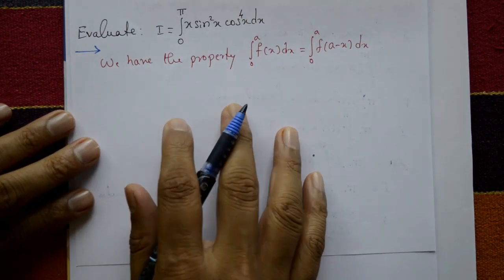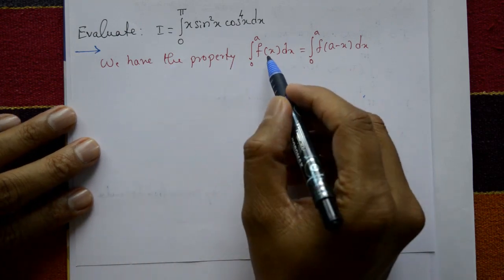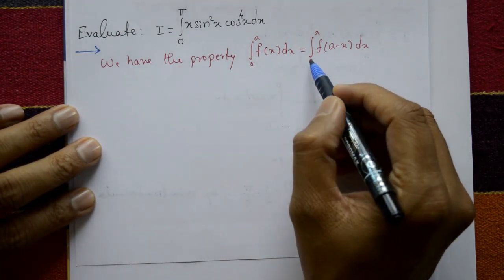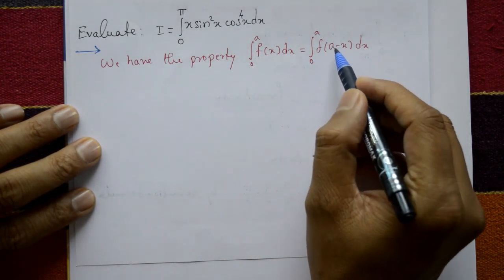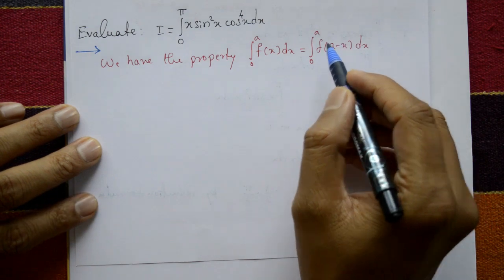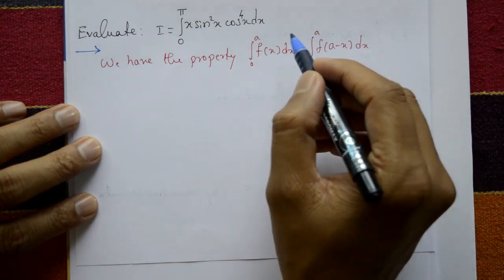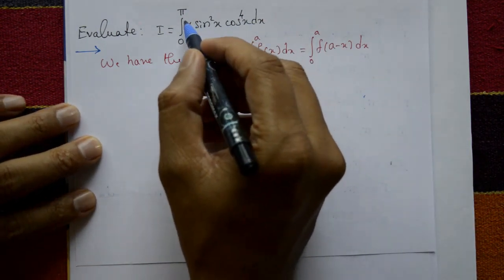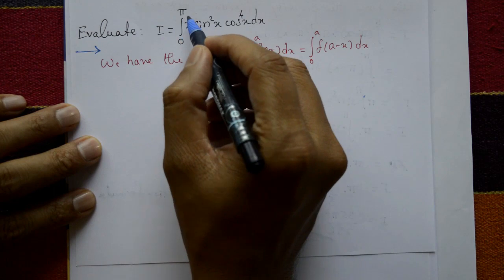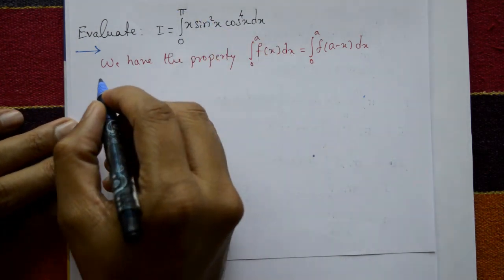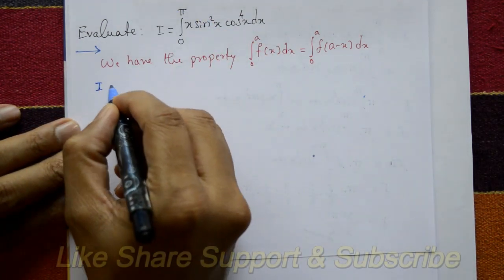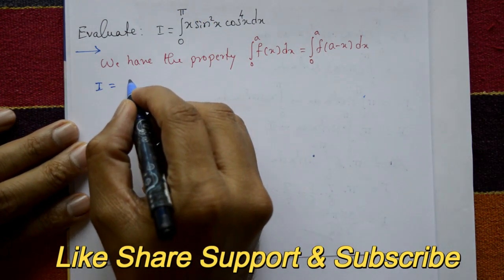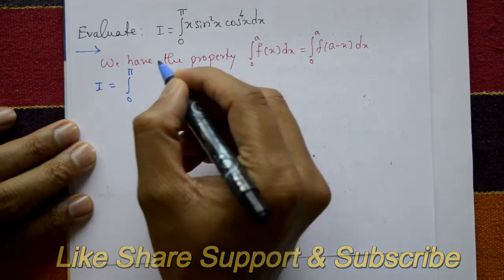We have a property: integration from 0 to a of f(x) dx is equal to integration from 0 to a of f(a minus x) dx. In this example, a means π.